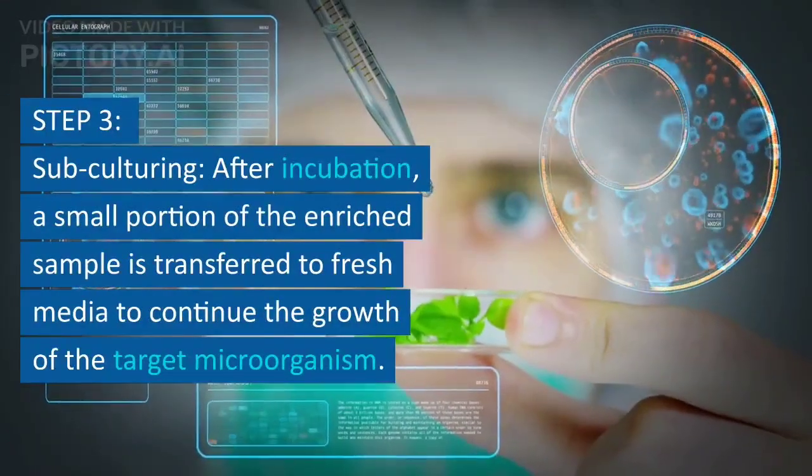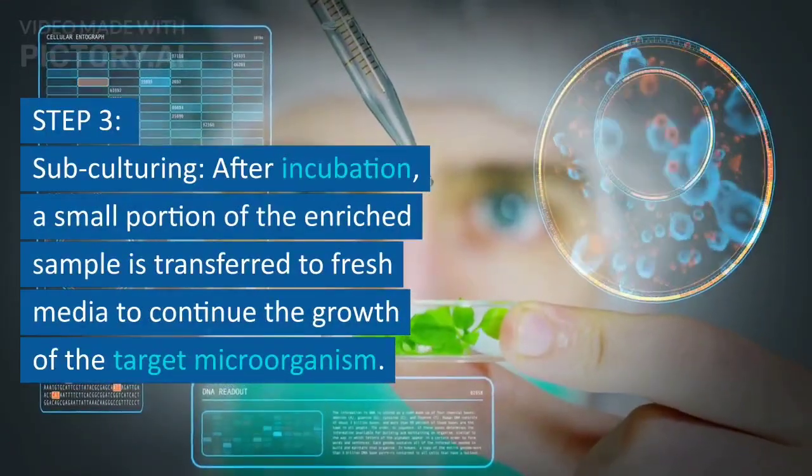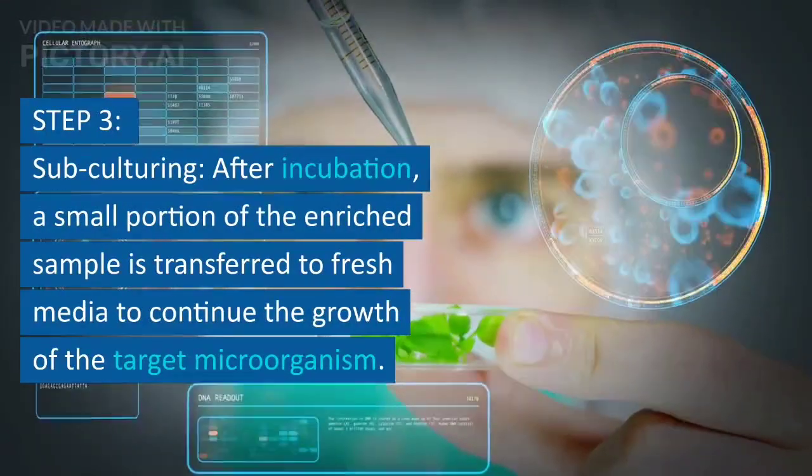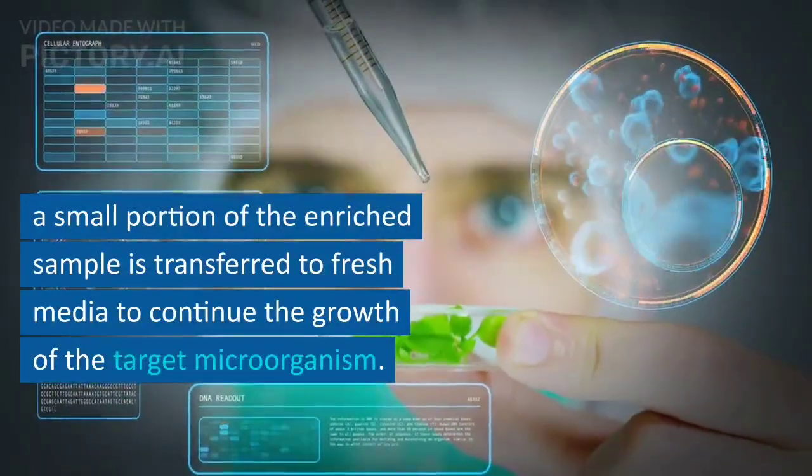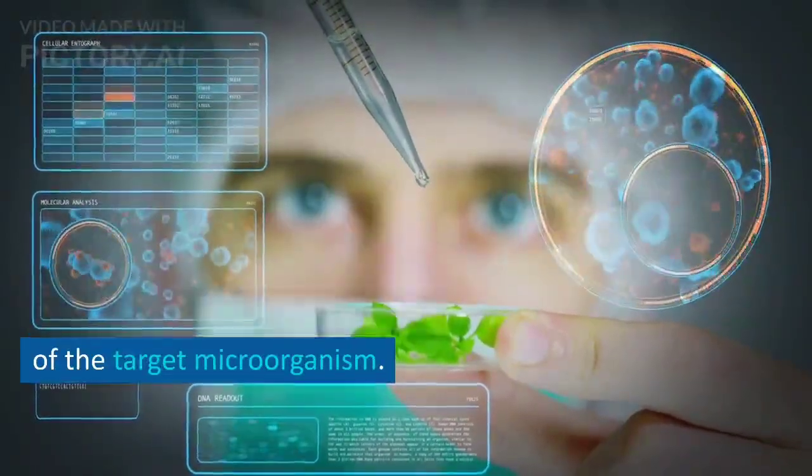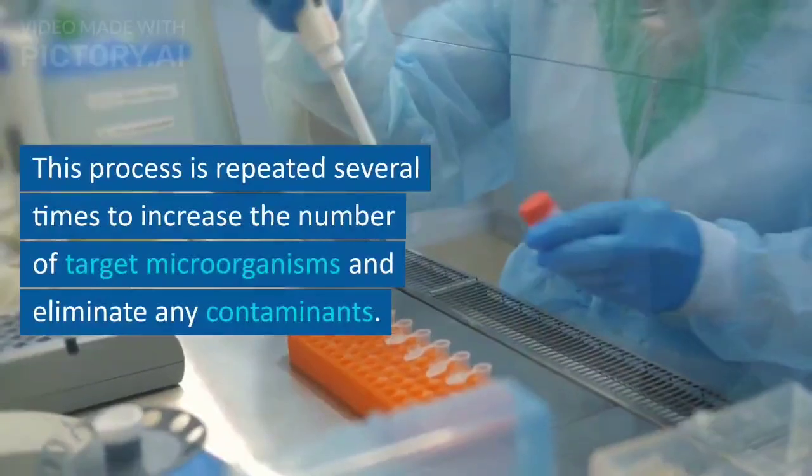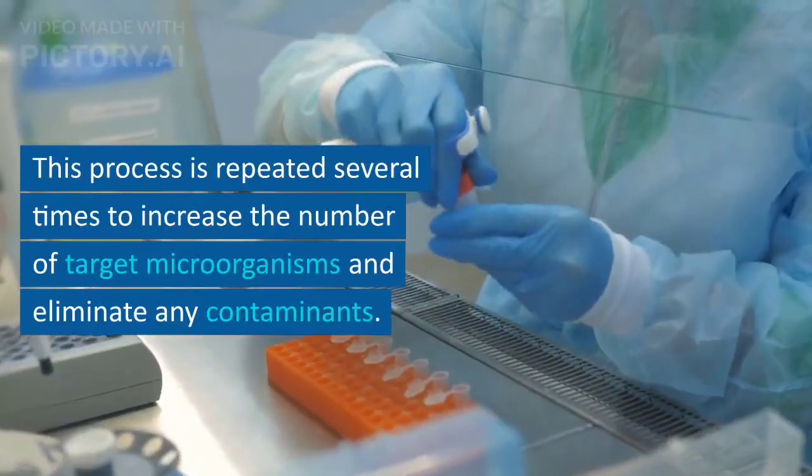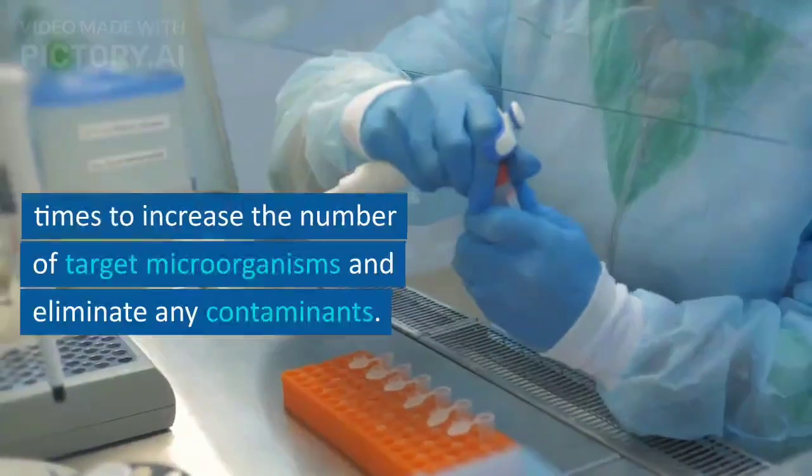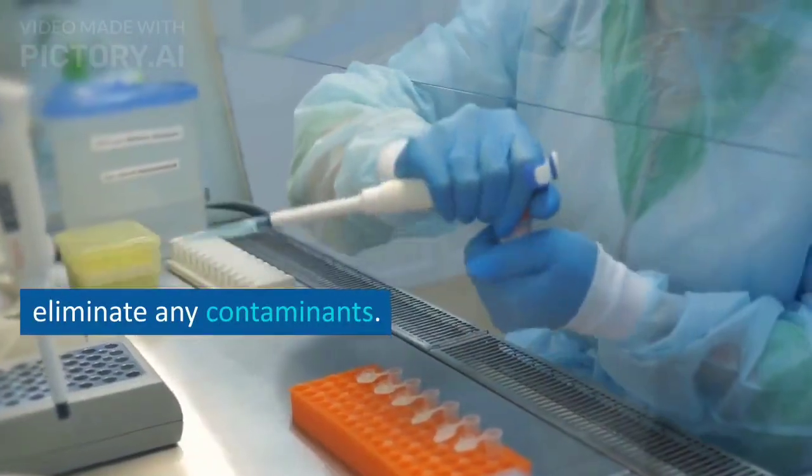Step 3, Subculturing. After incubation, a small portion of the enriched sample is transferred to fresh media to continue the growth of the target microorganism. This process is repeated several times to increase the number of target microorganisms and eliminate any contaminants.